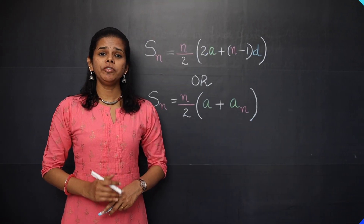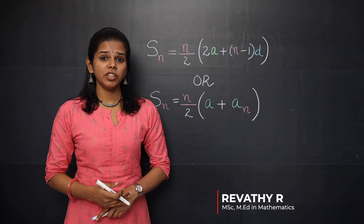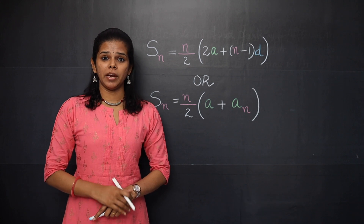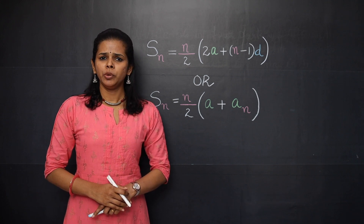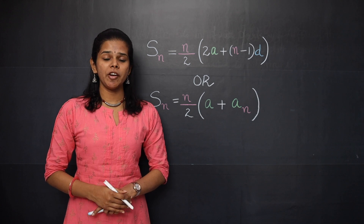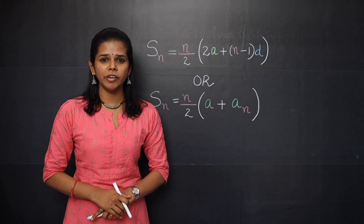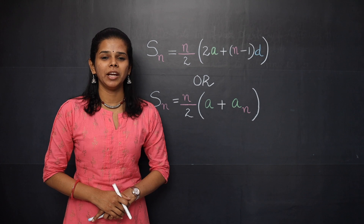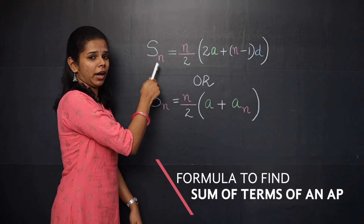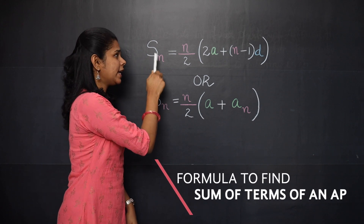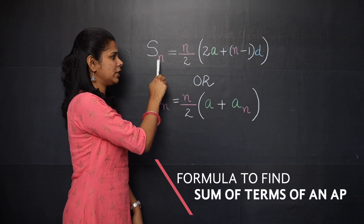You know how to find the nth term of an AP, the 25th term, the 100th term. But do you know how to find the sum of 100 terms of an AP or a thousand terms? You have a formula. SN is how we denote the sum of n terms.